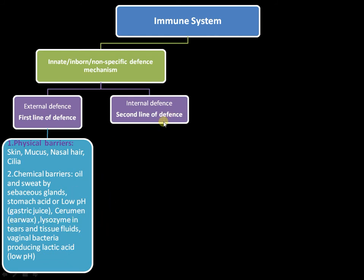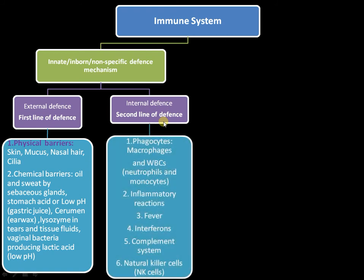Once a pathogen has overcome these hurdles, it encounters the second line of defense — the internal defense — which is patrolled by many types of cells. One of these cell types is phagocytes. Phagocytes include macrophages, neutrophils, and monocytes. Phagocytes are cells that can engulf a pathogen or bacteria and degrade and eliminate it from the system.